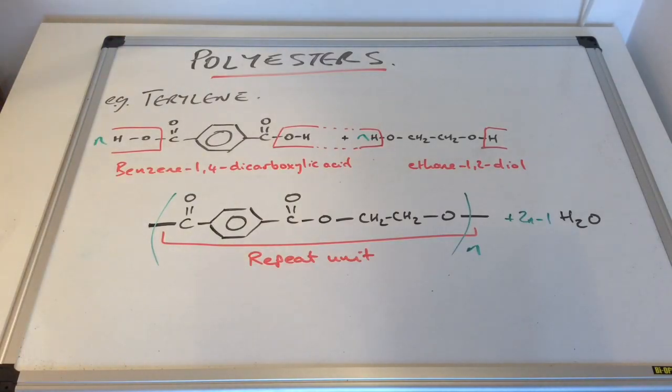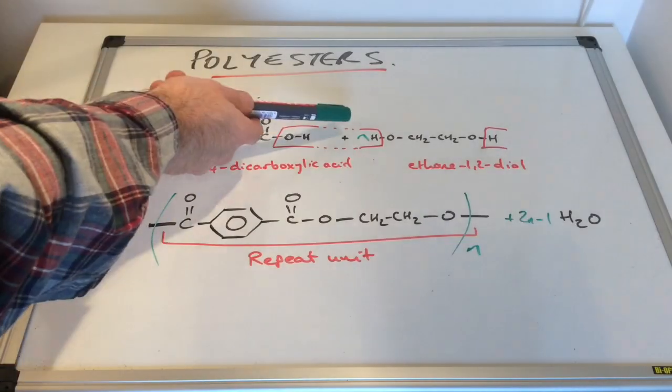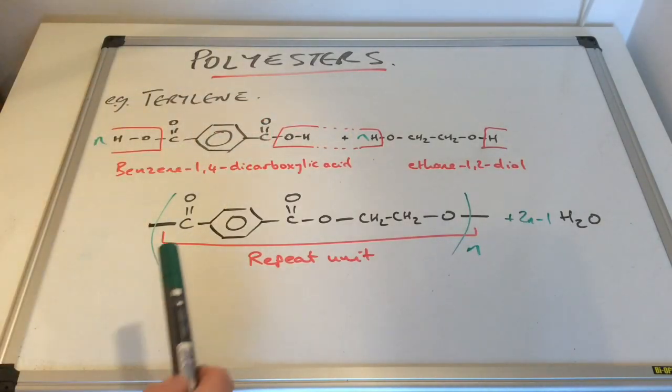And that is turned this into an equation. So if we wanted to make this polyester, Terylene, we'd need N moles of the dicarboxylic acid. N just means a large number. N moles of the diol. And we'd create N moles of the repeat unit.